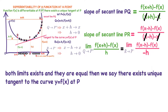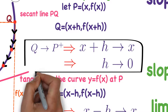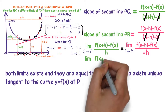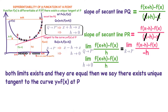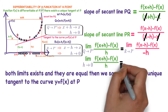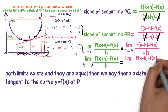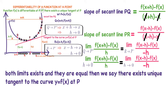Observe: Q tends to P⁺ means h tends to zero — this gives the slope of the tangent to the curve at point P. Similarly, R tends to P⁻ also means h approaches zero. Writing both in terms of h approaching zero: the right-hand limit and left-hand limit of the slope expression both give the slope of the tangent at point P. If both limits exist and are equal, there exists a unique tangent to the curve at point P.